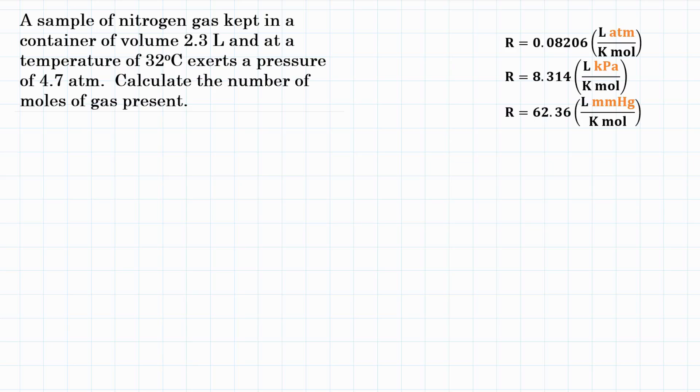A sample of nitrogen gas kept in a container of volume 2.3 liters and at a temperature of 32 degrees Celsius exerts a pressure of 4.7 atmospheres. Calculate the number of moles of gas present.